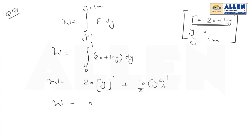So this is 20 times 1 minus 0, plus 5 times 1 minus 0. The work done equals 20 plus 5 equals 25 joules. So the right answer is 25 joules.